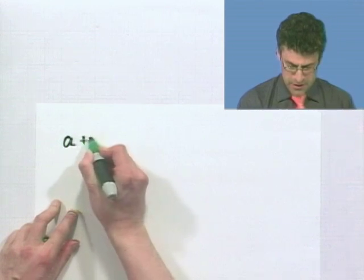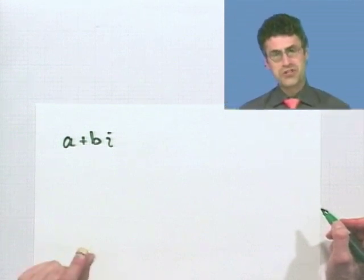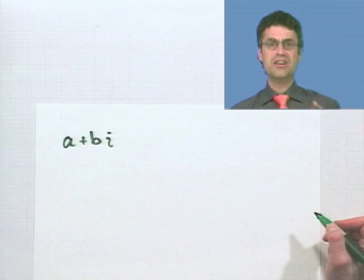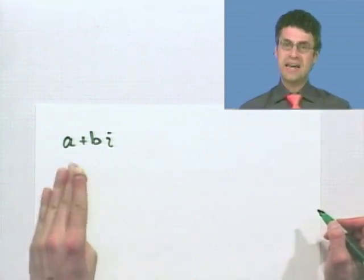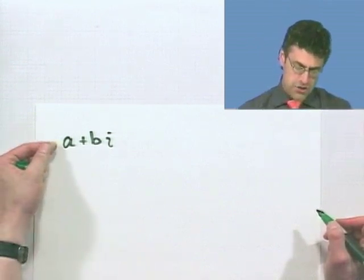Suppose I'm looking at a polynomial equation where all the coefficients are real numbers. And suppose that I know that one solution turns out to be a complex number of the form a plus bi. Then since all the coefficients are real numbers, I automatically know for free a second zero to this particular equation, namely the conjugate of this.